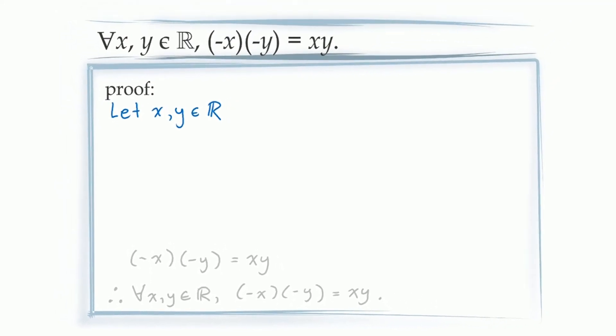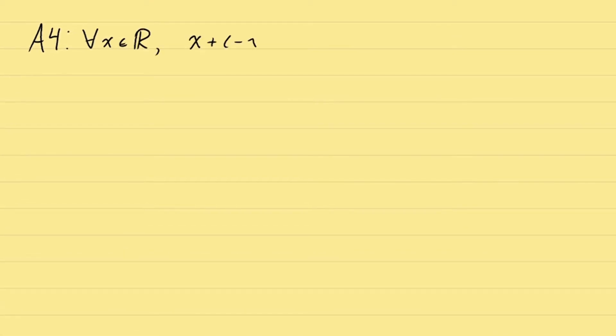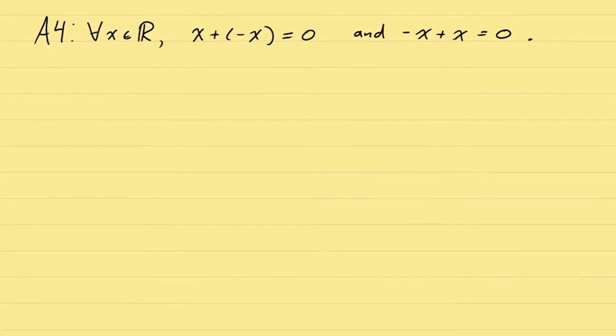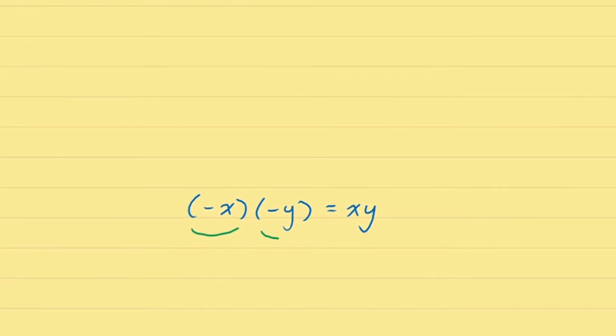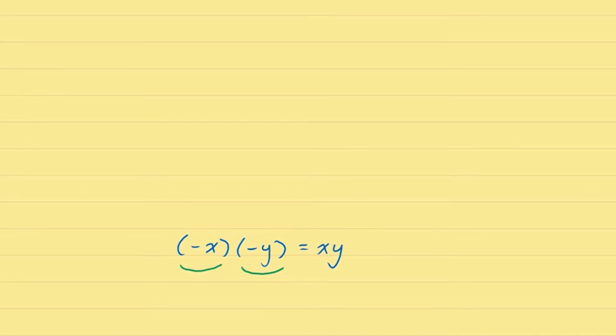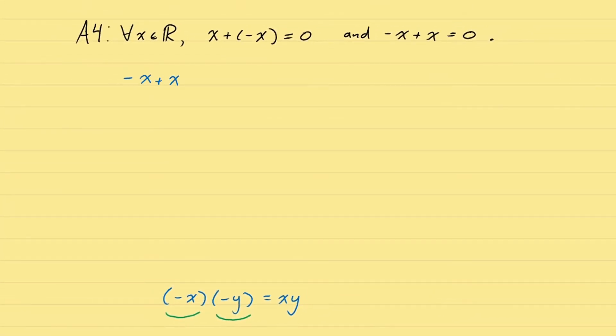As usual, let's get out a piece of scrap paper. Just like Proposition 2, Proposition 3 is a property of negative numbers, which means we're going to be relying mostly on Axiom A4. Recall that Axiom A4 says that any real number added to its negative will produce 0. In our case, the statement we're trying to demonstrate — negative x times negative y equals xy — contains two negatives: the negative of x and the negative of y. Applying our axiom to these, we get two equations: negative x plus x equals 0, and negative y plus y equals 0.